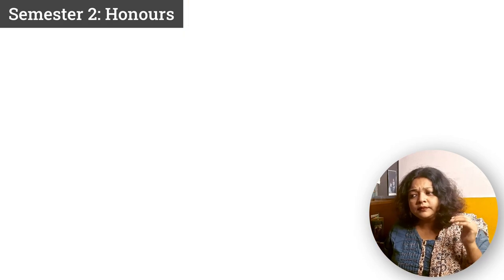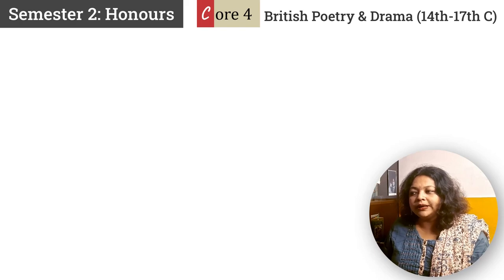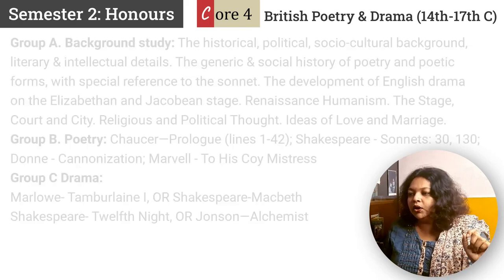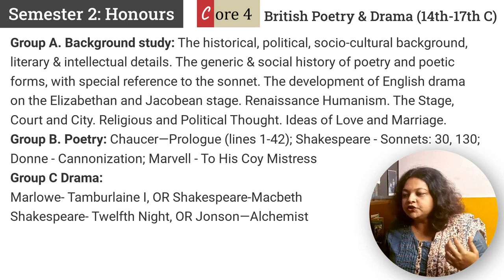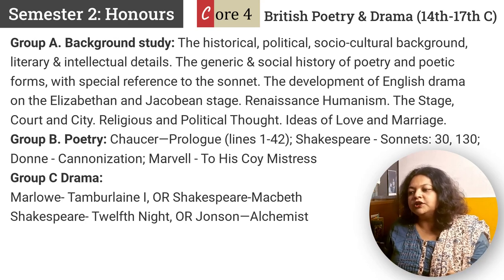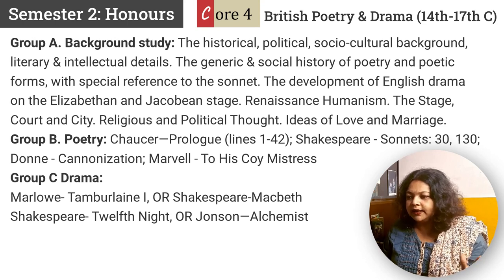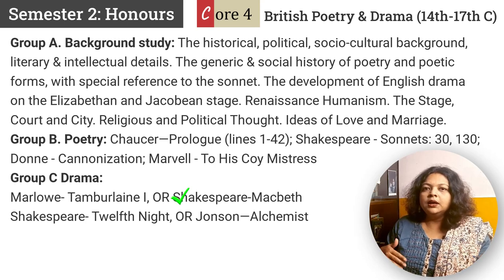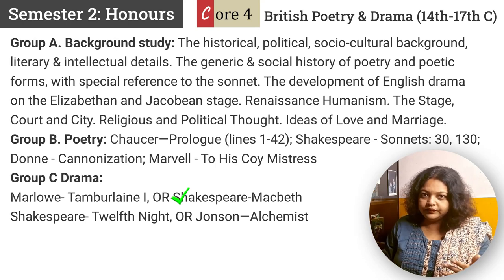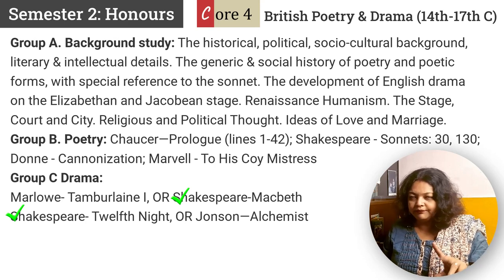Now let's move to Core 4, which is entirely on British poetry and drama from the 14th to 17th century — the Renaissance period. Group A is background study. Group B texts include Geoffrey Chaucer's Prologue lines 1 to 42, Shakespeare's Sonnets 30 and 130, Donne's Canonization, and Marvell's To His Coy Mistress. Group C drama includes either Christopher Marlowe's Tamburlaine Part 1 or William Shakespeare's Macbeth, and either Shakespeare's Twelfth Night or Ben Jonson's The Alchemist — your college will teach one from each pair.